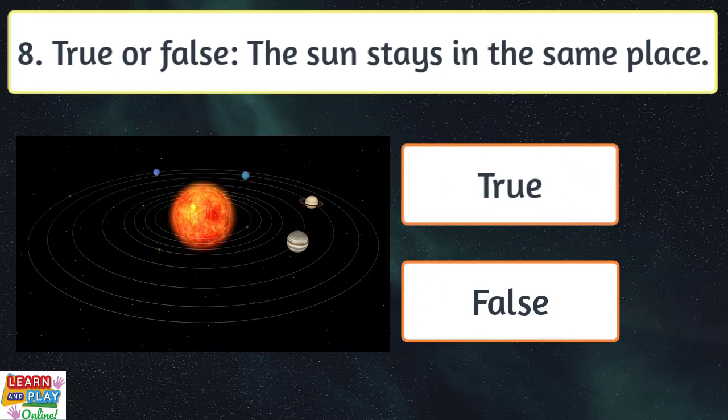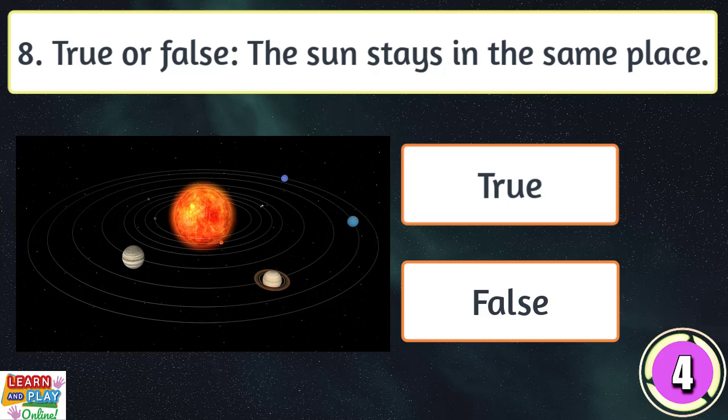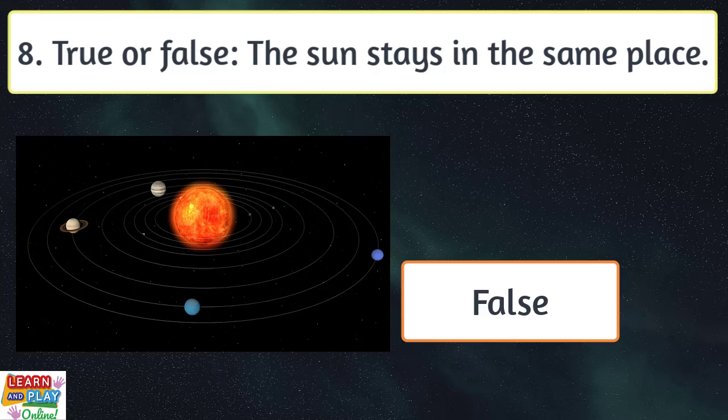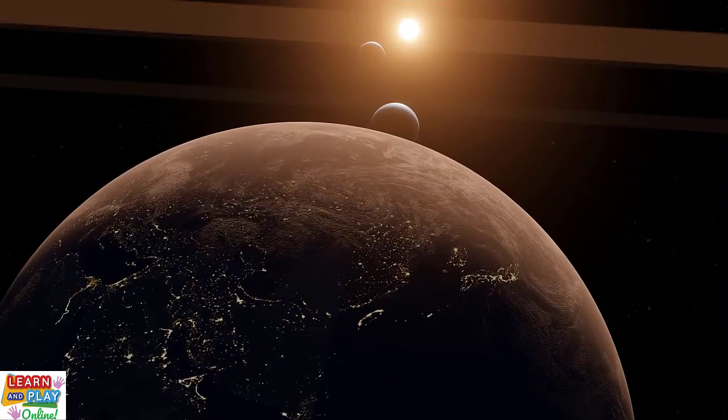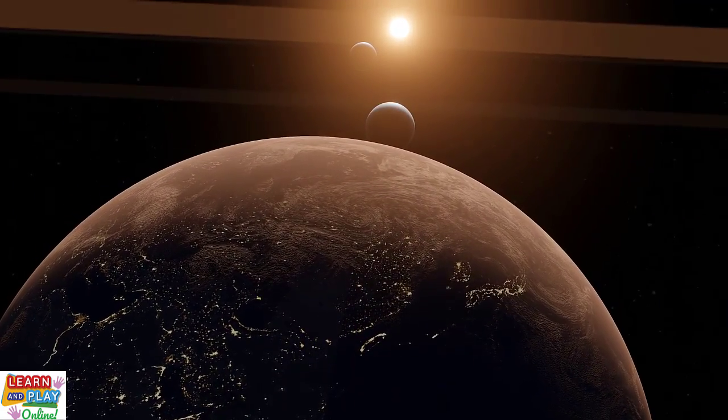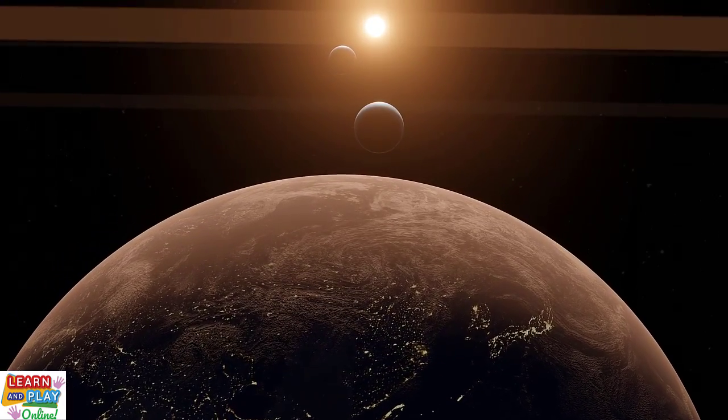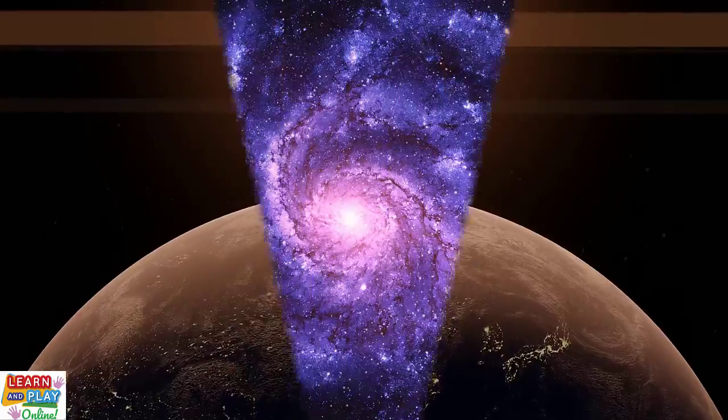Question eight. True or false? The sun stays in the same place. False. Even though it is at the center of our solar system and influences the orbiting path of everything within it, the sun is actually always moving at an incredibly fast rate.